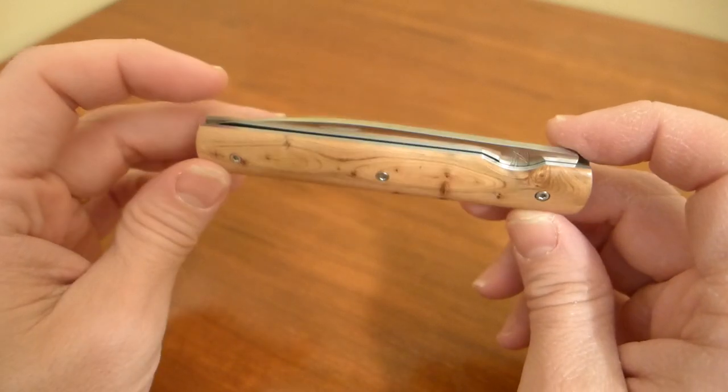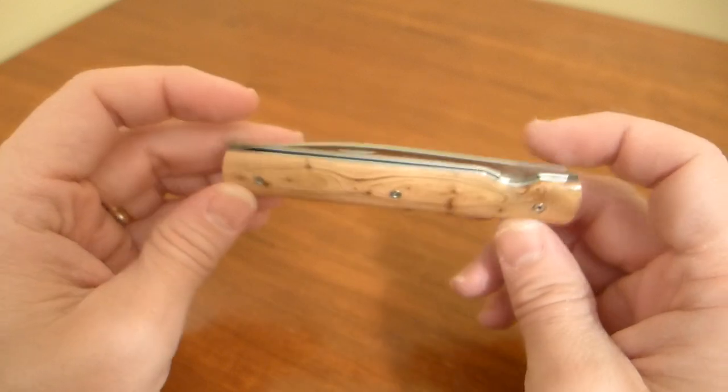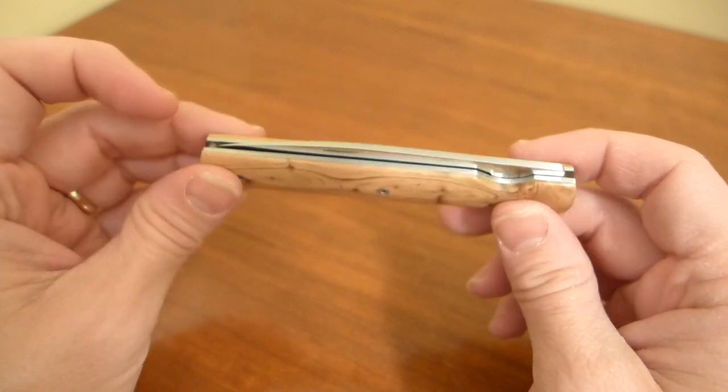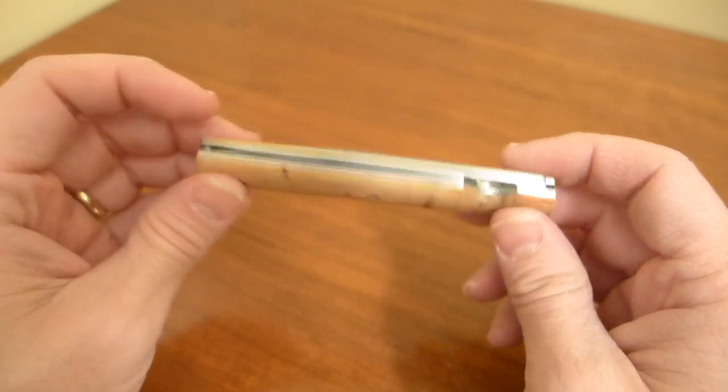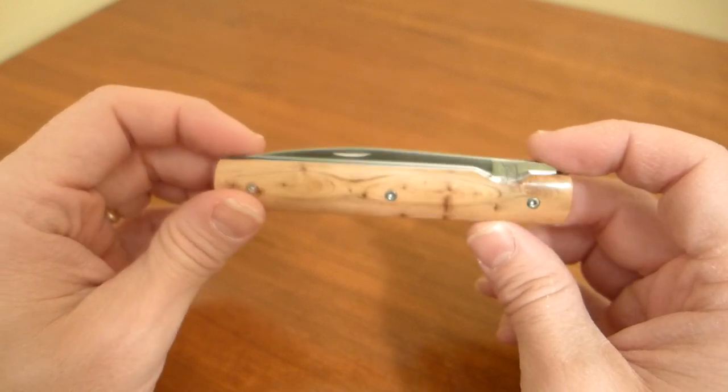Juniper is one of the ingredients in gin. In fact, the name gin comes from the French for juniper. So if you like the smell of gin, if you like the smell of pepper, this is a really interesting knife to have.